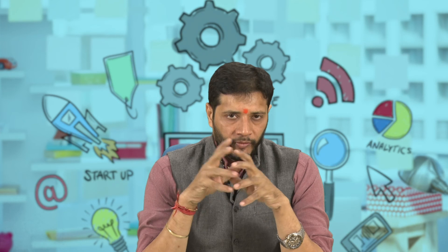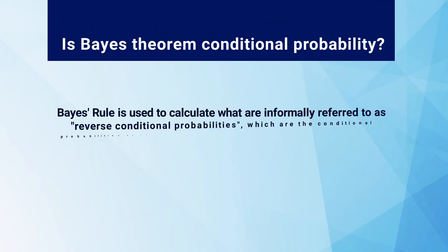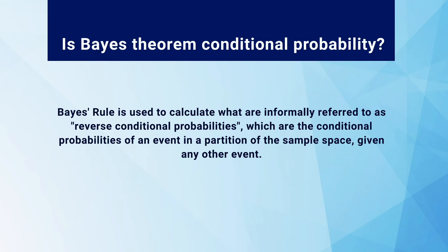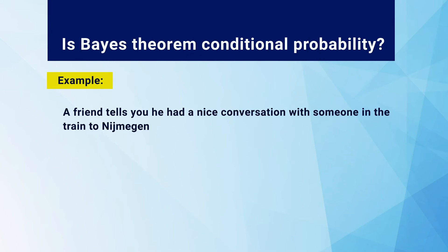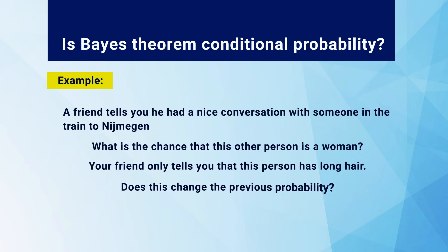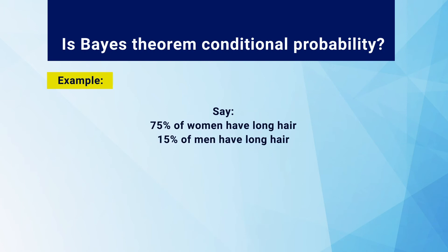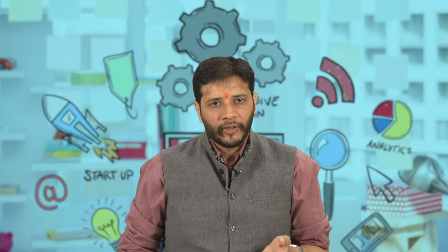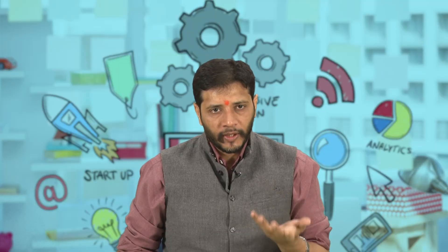Since we have discussed conditional probability, an important question is: is Bayes' theorem just conditional probability? Bayes' rule is used to calculate what are informally referred to as reverse conditional probabilities — the conditional probabilities of an event in a partition of the sample space given any other event. For example, a friend tells you he had a nice conversation with someone on a train. What is the chance the other person is a woman, given that the person has long hair? 75% of women have long hair while 15% of men have long hair.